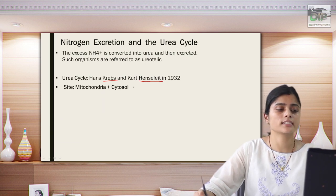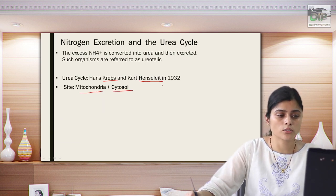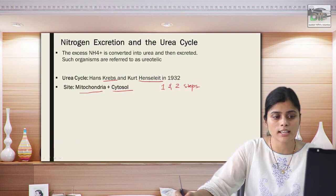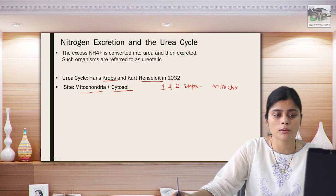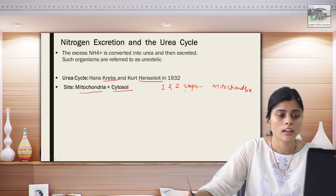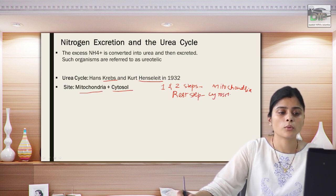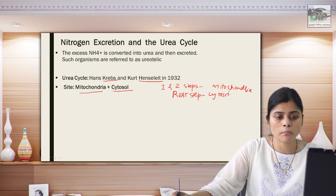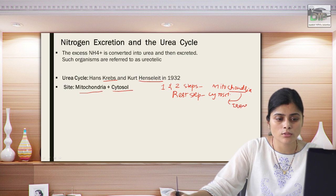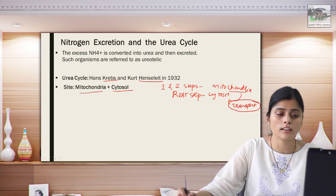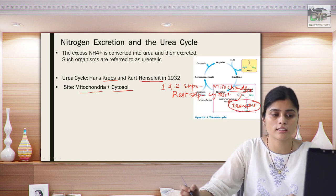The urea cycle takes place inside the mitochondria and also in the cytosol. The first two steps occur inside the mitochondria because the enzymes are specifically present there. The remaining steps take place inside the cytosol. The intermediate product formed in the mitochondria has to be transported to the cytosol, and if any transport deficiency or defect is present, that can also lead to some form of urea cycle defect.